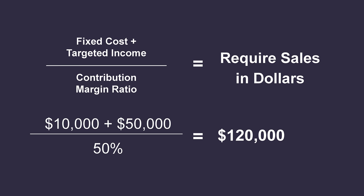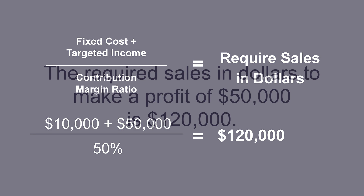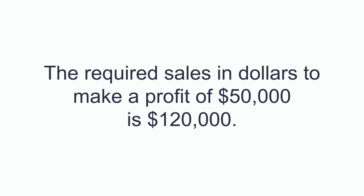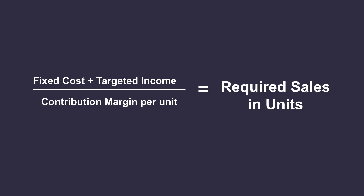Now that you know your contribution margin ratio, you can plug it into the formula. Required sales in dollars equals $10,000 (the fixed cost) plus $50,000 (the targeted income), divided by the contribution margin of 50%. Therefore, the required sales in dollars to make a profit of $50,000 is $120,000.